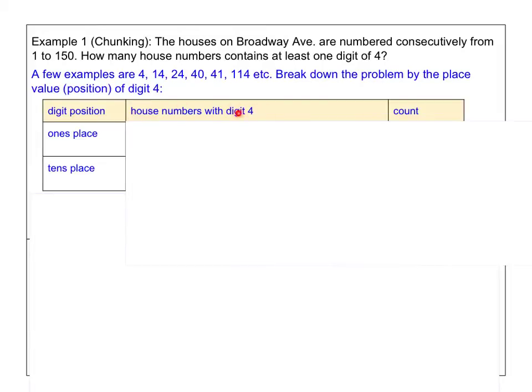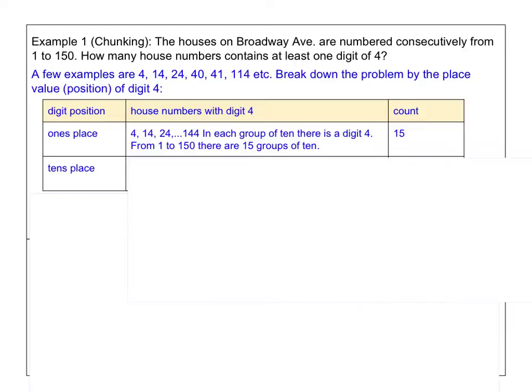So in my table, I have listed the position of the digit 4, which can be in the ones place or in the tens place. And then I'm going to count the house numbers with the digit 4 in that place. So house numbers with digit 4 in the ones place could be, I'm listing them out without missing anyone, 4, and then 14, 24, all the way to 144. In each group of 10, like in each decade, there is a digit 4 in the ones unit. So from 1 to 150, there are 15 groups of 10. So if you count that, then there are 15 such house numbers.